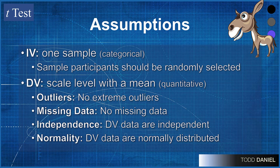Then we want to make sure that our dependent variable values pass the following tests. We want to make sure we don't have any extreme outliers. We want to make sure we don't have any missing data. We want to know that our dependent variable data are independent, which we know because they are randomly selected, that would pass that assumption. And then finally, the assumption of normality is something that we can check with our software.